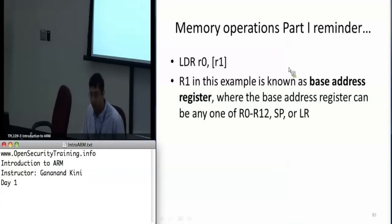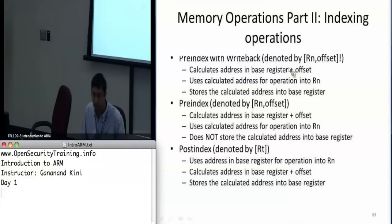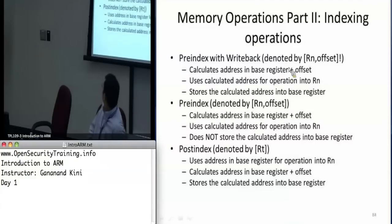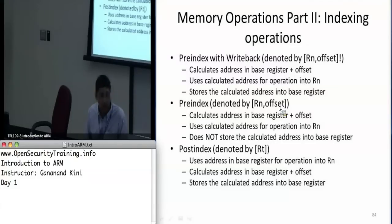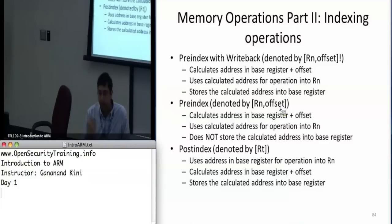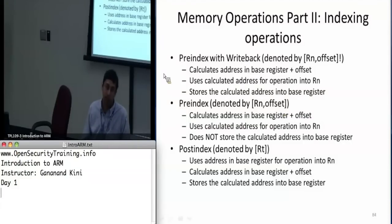It can be any one of these values: R0 through R12, the stack pointer, or the link register. The earlier example was something we call pre-indexing, where you have the register followed by an offset — the offset can be zero or left out. Essentially it takes that offset, adds it to the base address, and uses the resulting address for the operation, whether it's a load or a store.